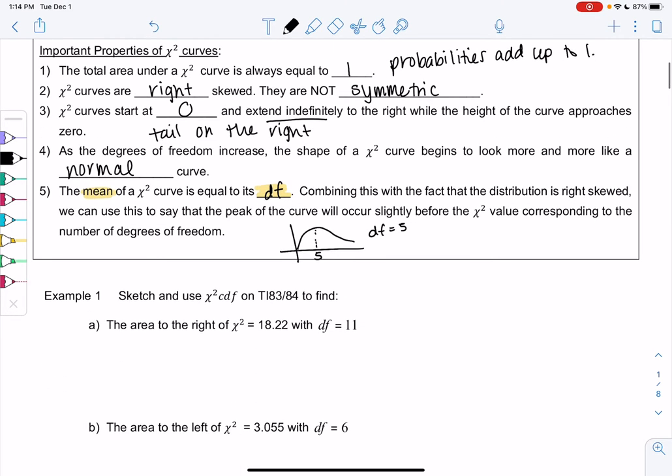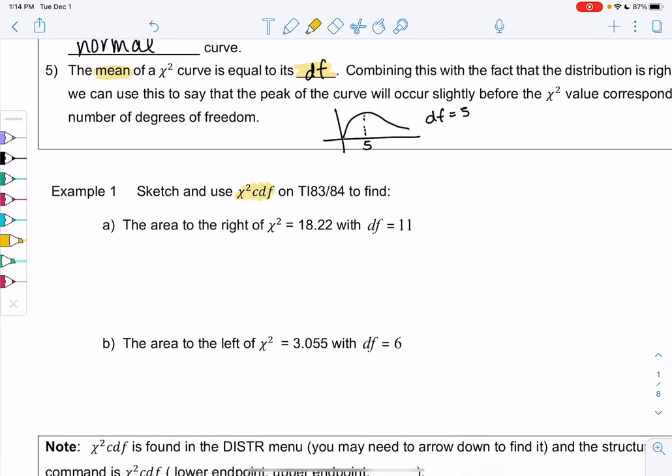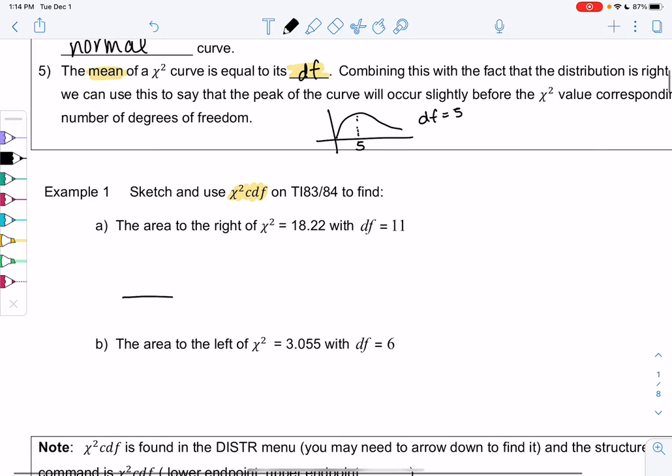So let's use chi-square on the calculator. So if you don't have it out, go get your calculator and come back. If you have it out, let's go. So it's going to be similar to normal CDF and TCDF, but it's going to be called chi-square CDF. So let's sketch the curve and then we'll find it on the TI-89. So we're going to draw a chi-square, so there's only a tail on the right. It's a right skewed curve, it's not a normal curve.